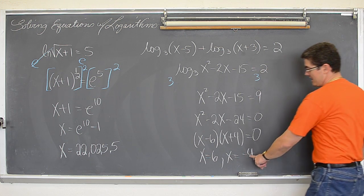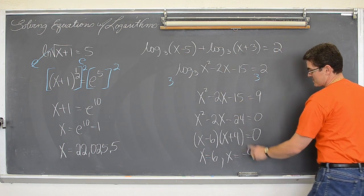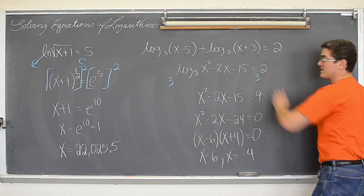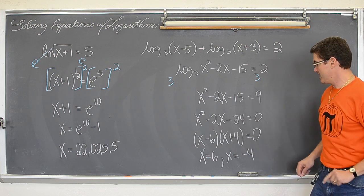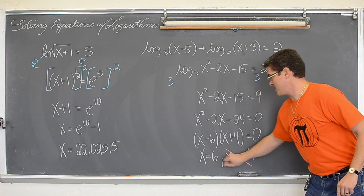My solutions are x equals 6 and x equals negative 4. Now, if I plug these back into the original problems, negative 4 minus 5 and negative 4 plus 3, those are both negatives. And again, you cannot log a negative number. So the only answer is 6.